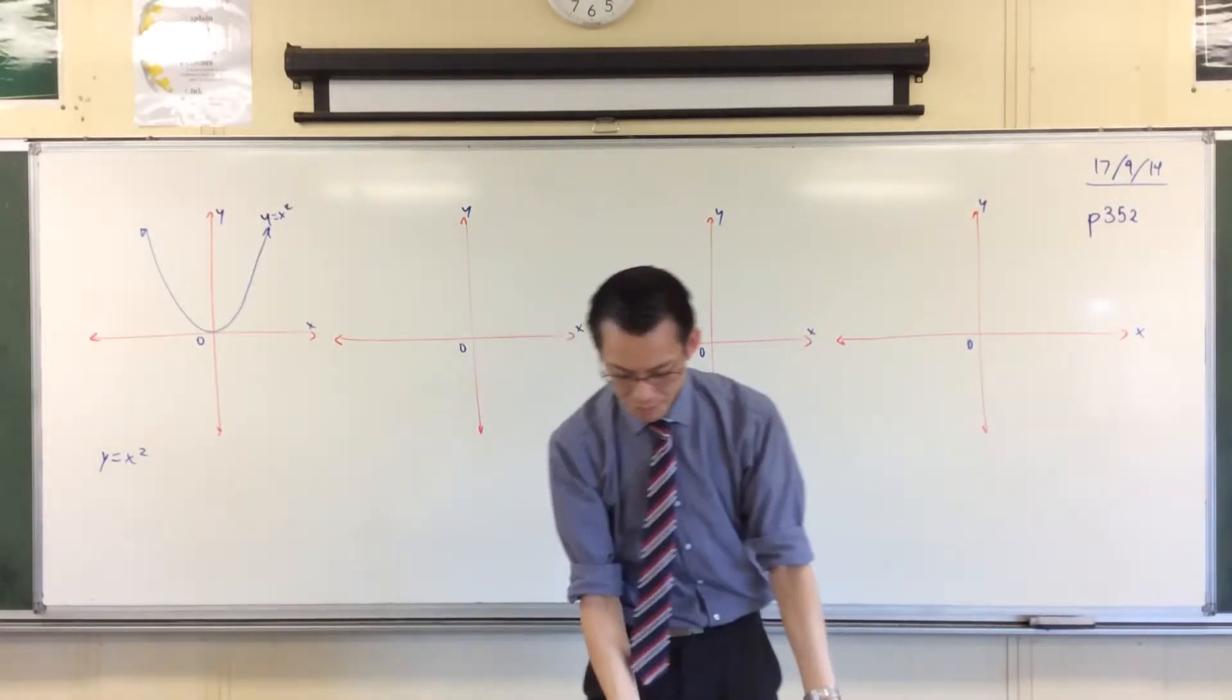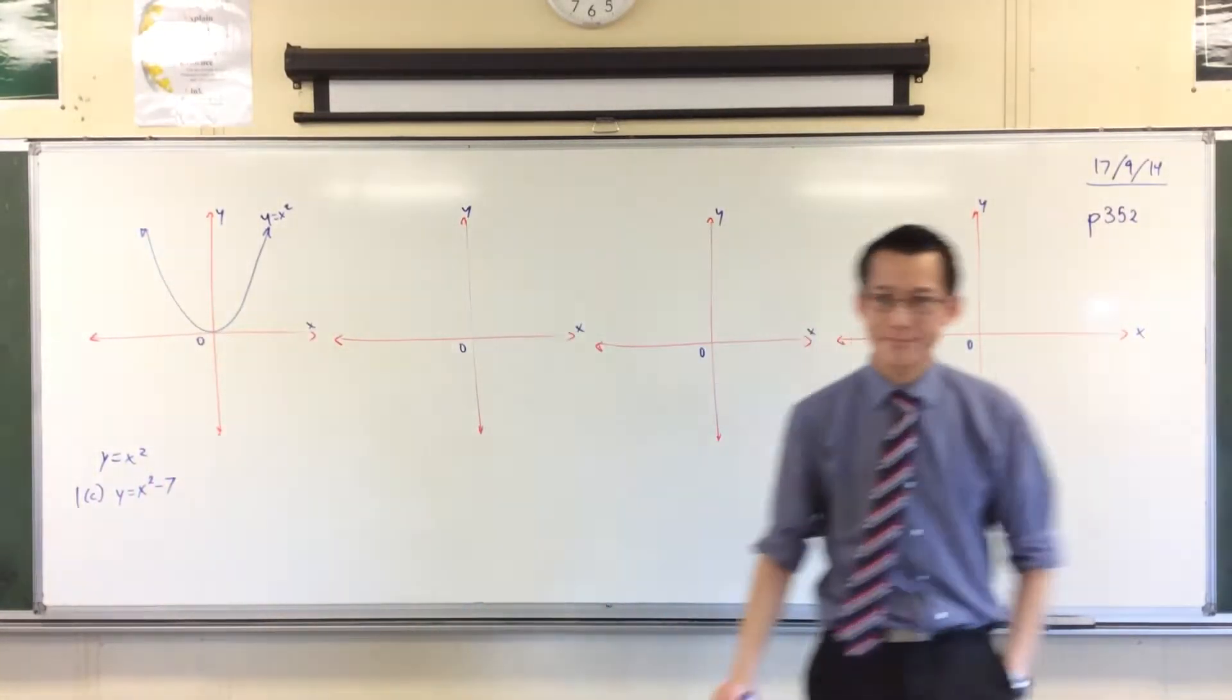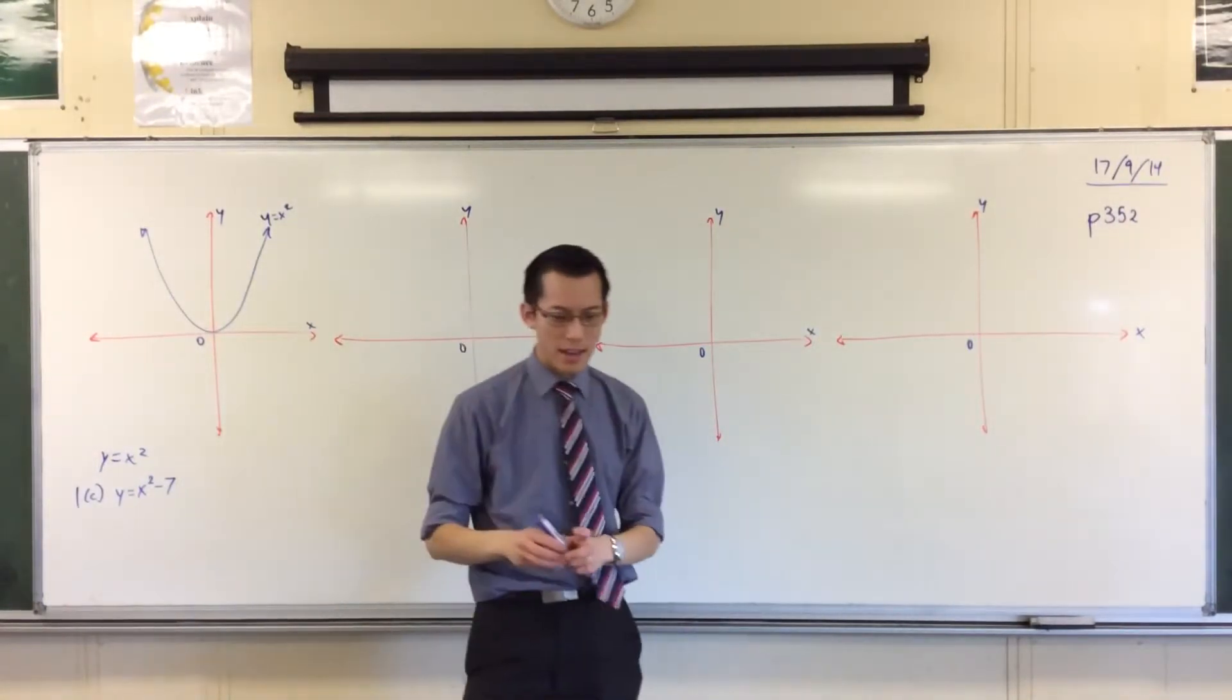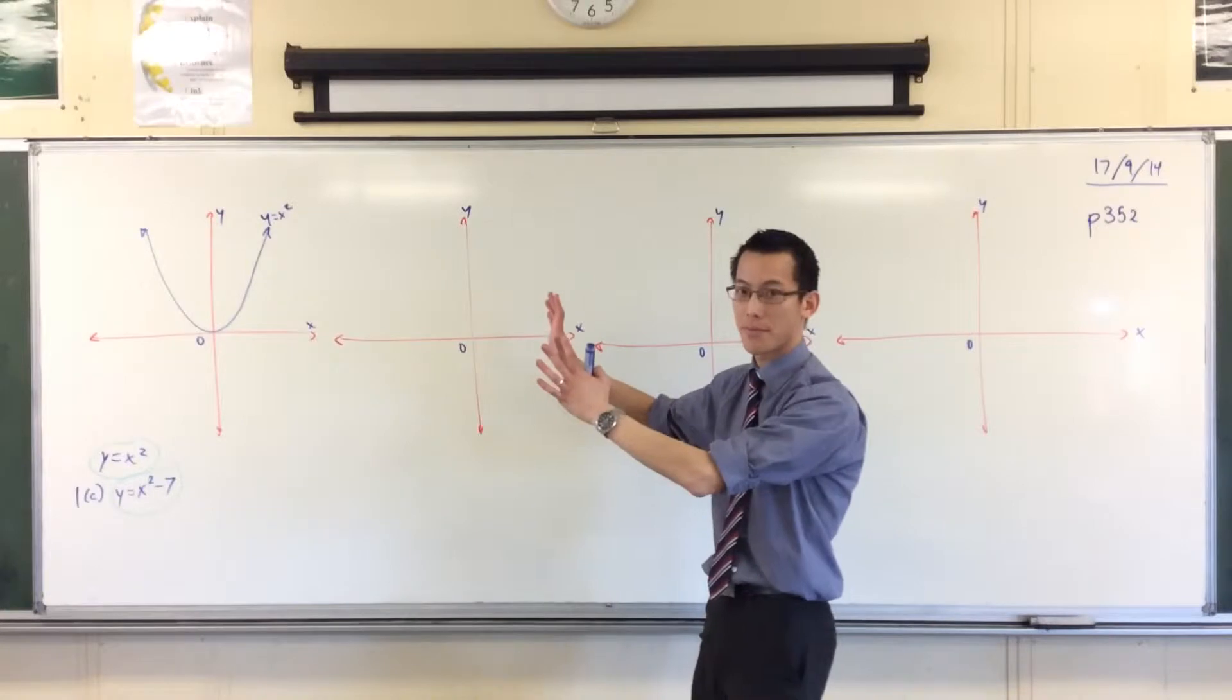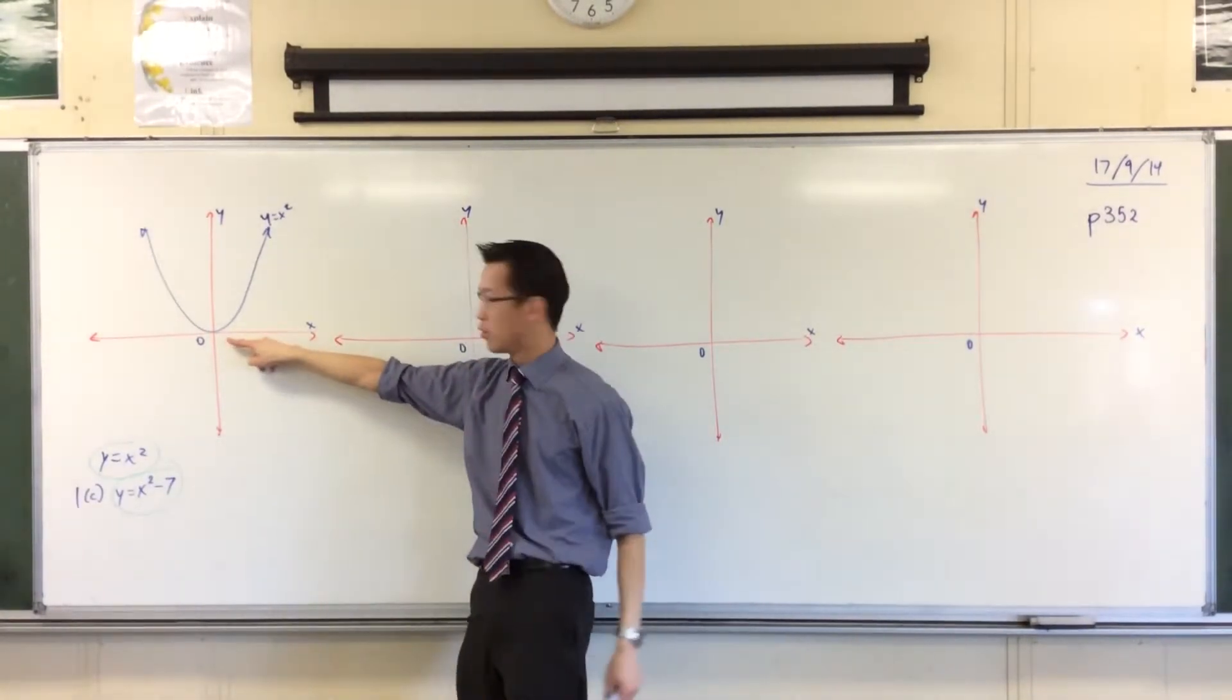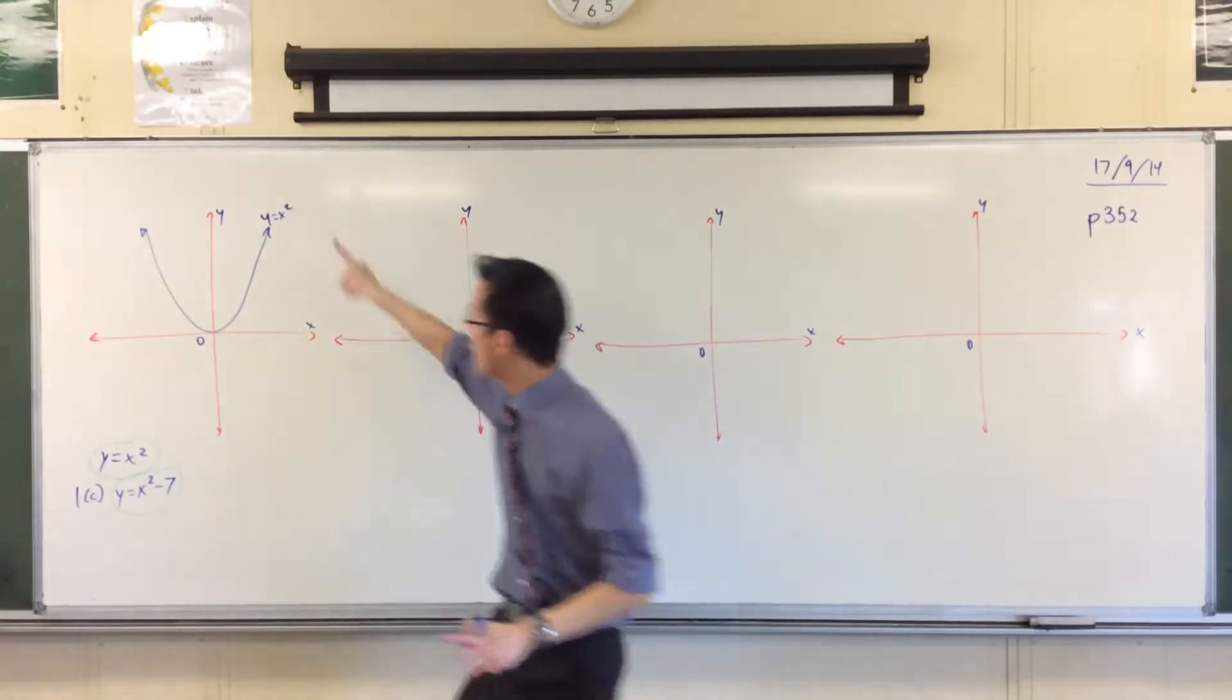So, let's compare it to some different ones. Let's have a look at question 1c. So, this is what 1c asks us to draw. Y equals X squared minus 7, right? So, you can see it's so similar to what we were graphing before. X squared, X squared minus 7. So, that minus 7, the effect that it has is it takes that entire shape and it shifts it or moves it down 7 units, right? If I was at the origin before, well, now I'll be 7 units below the origin.